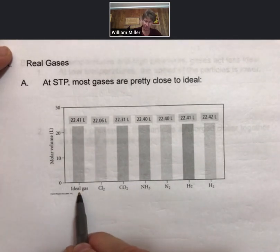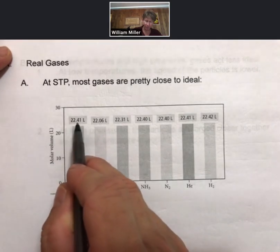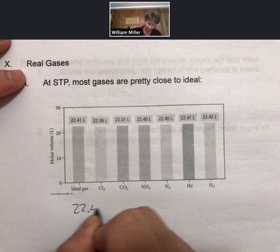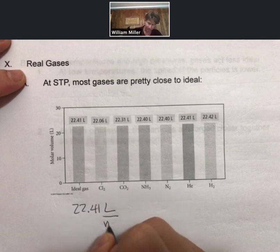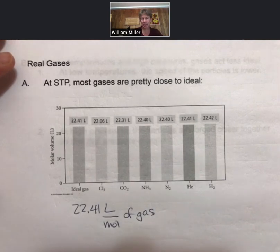The ideal gas, the truly ideal gas, would have a molar volume of 22.41 liters. That's 22.41 liters per mole of gas, and that's what you'd get using the ideal gas law.